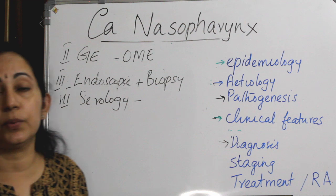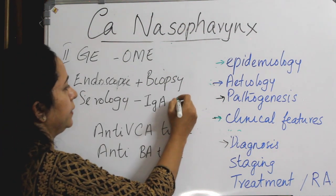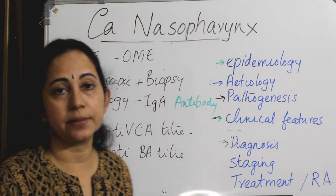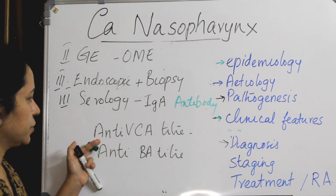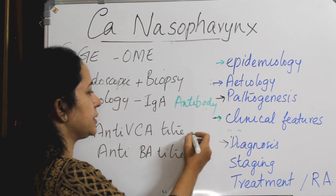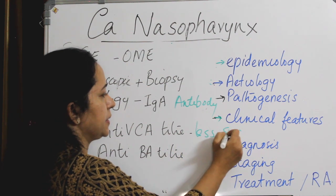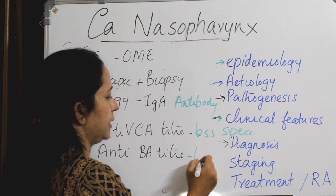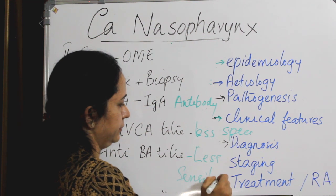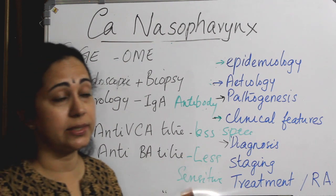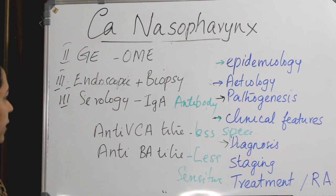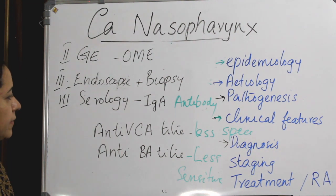For serology, IgA antibody titer against Epstein-Barr virus specific antigens is used. There are two titers: anti-VCA (viral capsid antigen) titer, which is less specific, and anti-EA (early antigen) titer, which is less sensitive. In serology, both anti-IgA antibody titers against VCA and EA should be taken.